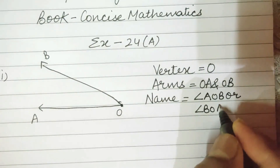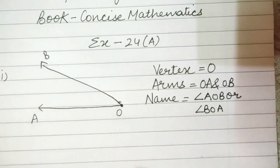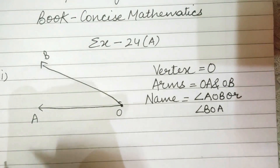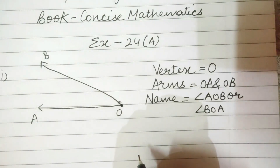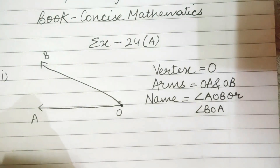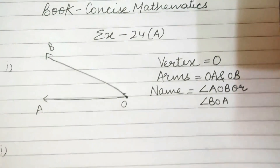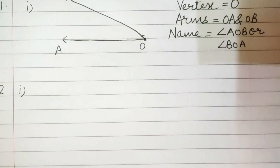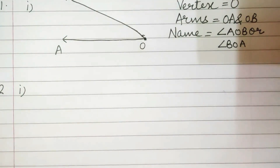The name of the angle: you can write it as angle AOB or you can write it as angle BOA. The second and third parts are the same; you can do them yourself.